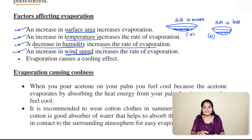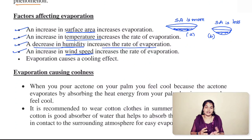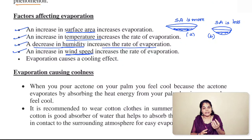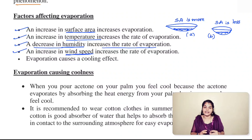For example, when we place wet clothes outside for drying, if the wind speed is more, clothes dry faster. When the atmosphere is humid, clothes take longer to dry. Similarly, on hotter days, drying of clothes is faster. The process of drying clothes is essentially evaporation — the water present in clothes is converted into vapor state.